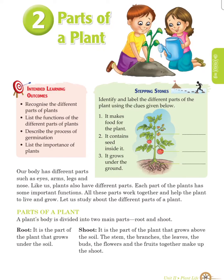Welcome to SuperScience. Today we will learn the lesson Parts of a Plant. Our body has different parts such as eyes, arms, legs and nose. Like us, plants also have different parts. Each part of a plant has some important functions. All these parts work together and help the plant to live and grow.